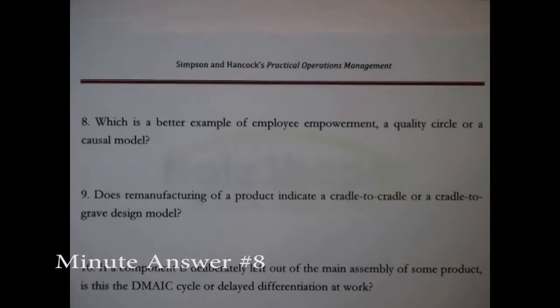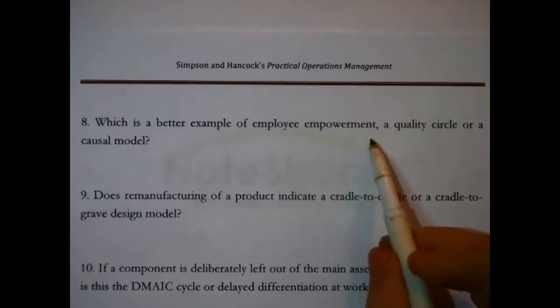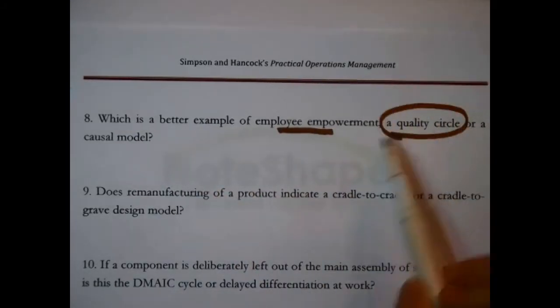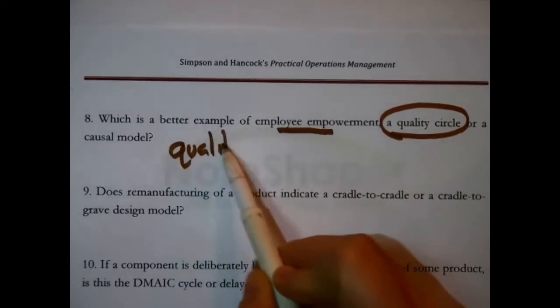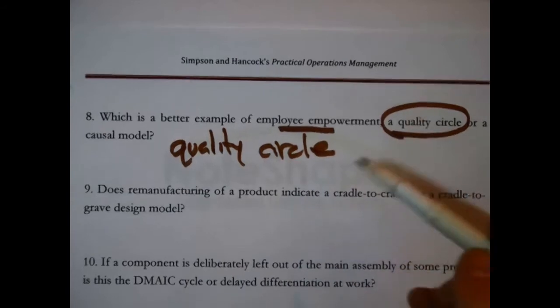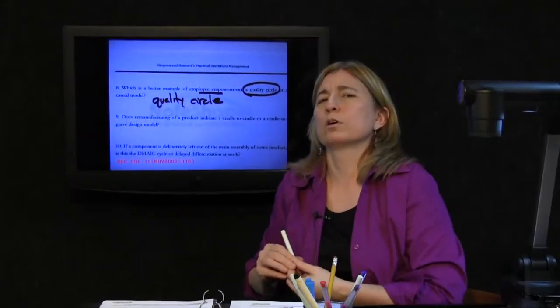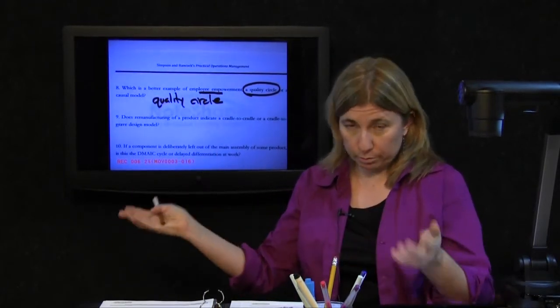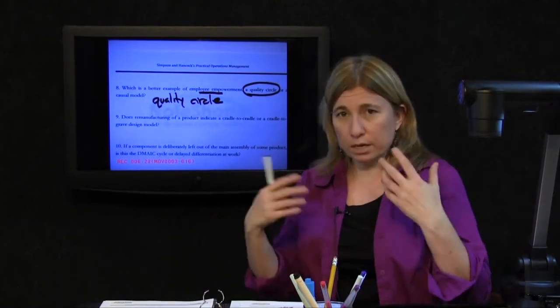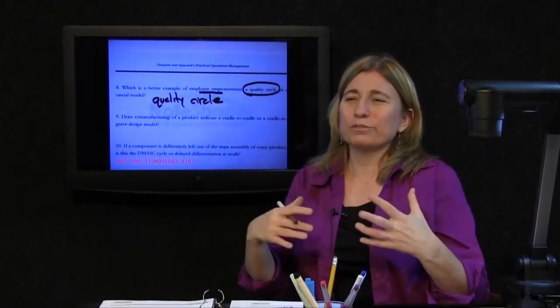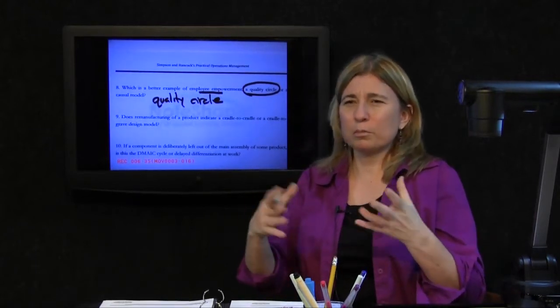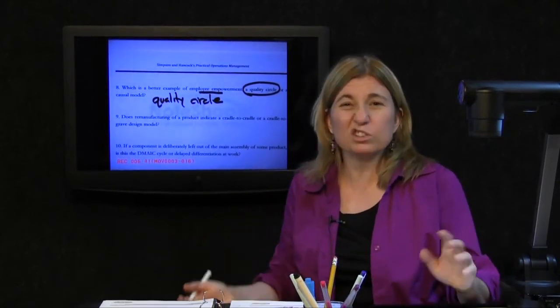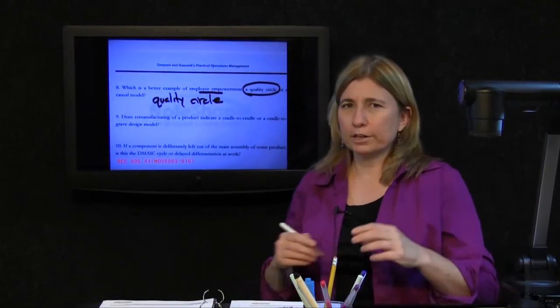Which is a better example of employee empowerment, a quality circle or a causal model? Obviously, quality circle. Quality circle is a group of employees who pause in their usual work and discuss how to better improve their operations. And they do this on a continual basis. The group is called a quality circle. It's an example of employee empowerment. More to the point, a causal model is generally mathematical. It's just an analytical entity or concept. It really doesn't have anything to do with employee empowerment. Next question.